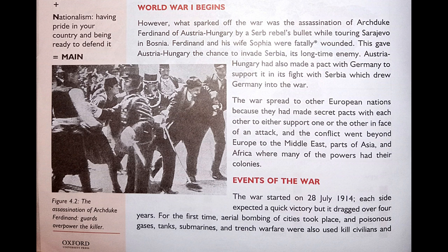Italy backed out of World War One and joined the Allies. World War One Begins: What sparked off the war was the assassination of Archduke Franz Ferdinand of Austria-Hungary by a Serb rebel's bullet while touring in Bosnia. Archduke means a man of very high rank. Ferdinand and his wife Sofia were fatally wounded — fatally meaning in a manner leading to death or disaster.